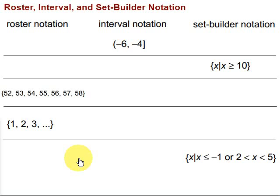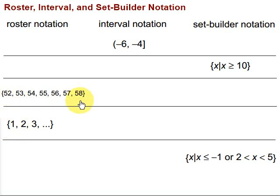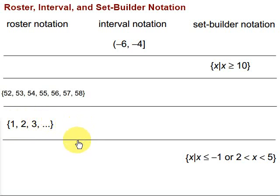First of all, roster notation. If you think about rosters — like a team roster — it's really just a list, and that is roster notation. It can be used to write a specific finite list of numbers, or it can also be used for an infinite list. To do an infinite list in roster notation, you want to write enough numbers that it's clear what the pattern is — going up one, and then dot dot dot says we're just continuing to go up one. So roster notation is just a list of the numbers in the set.